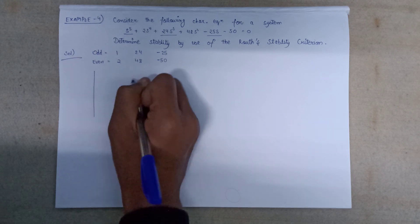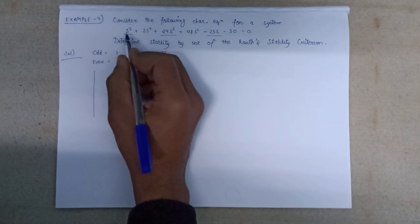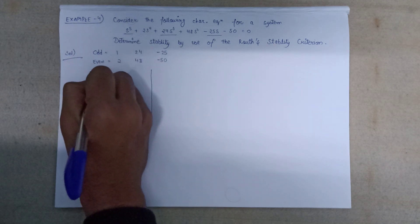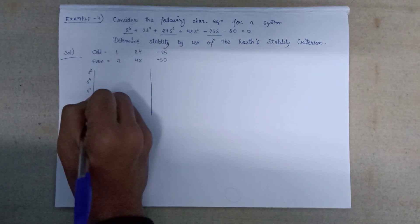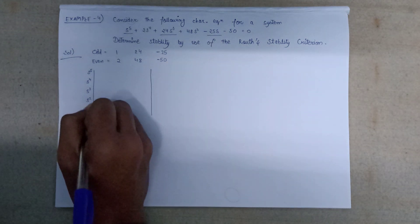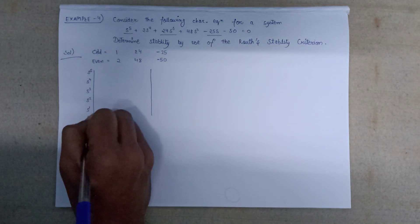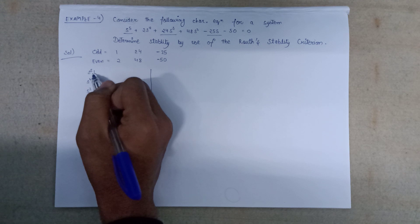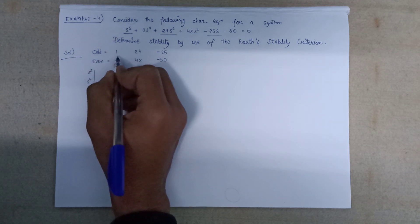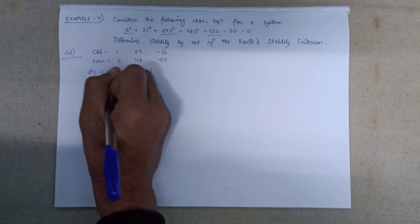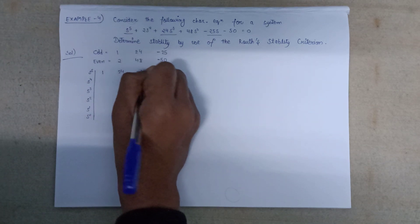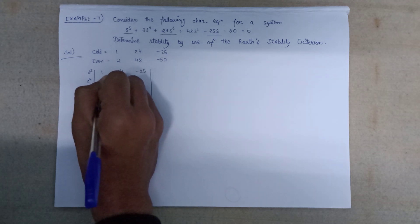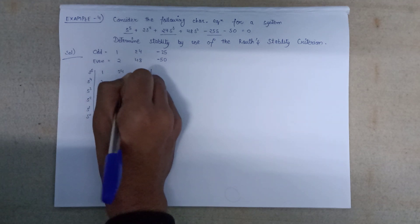We perform the formation of the Routh array, writing the powers of s in decreasing order: s⁵, s⁴, s³, s², s¹, s⁰. Since it starts with an odd power, we write the odd coefficients first: 1, 24, and minus 25. Then we write the even coefficients: 2, 48, and minus 50.